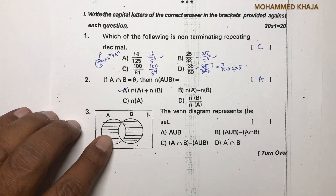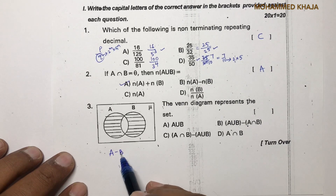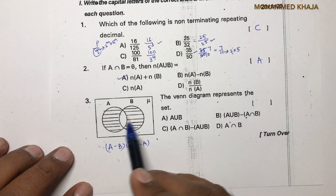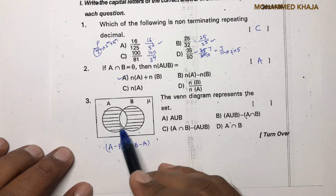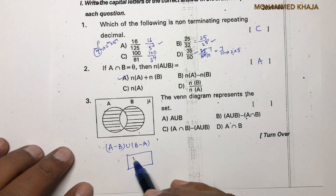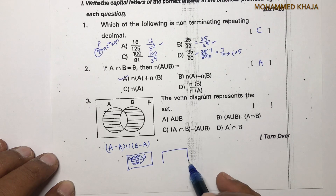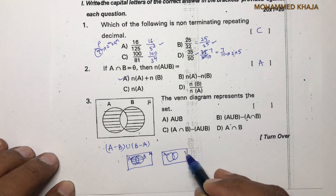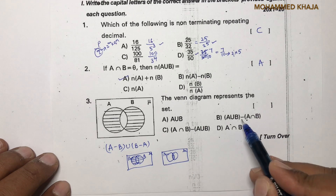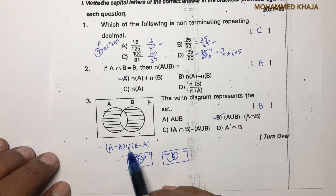Question 3: The Venn diagram shows A minus B and B minus A shaded, with the middle part (A∩B) not shaded. This can be written as (A−B)∪(B−A). Since that option isn't listed, we express it as A∪B − A∩B, because A∪B shades everything and removing A∩B gives the symmetric difference. Correct option is B, also called the symmetric difference of sets.